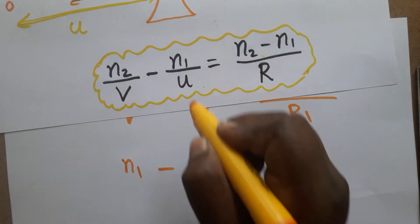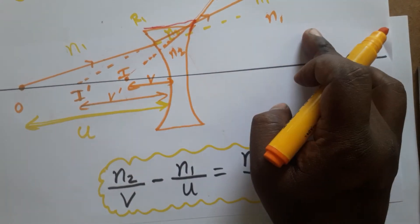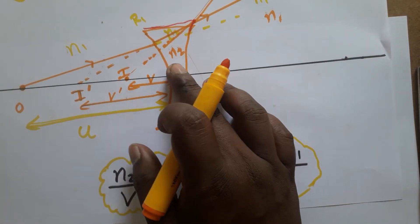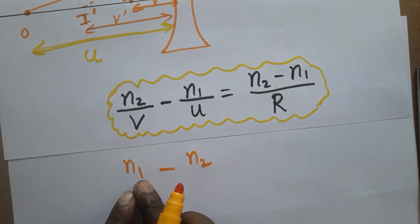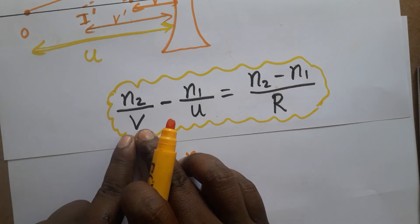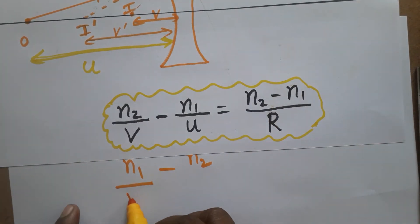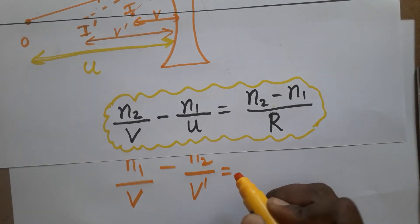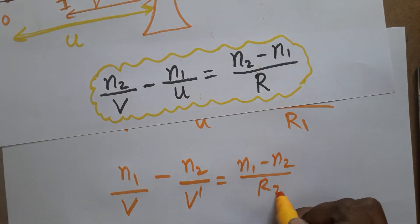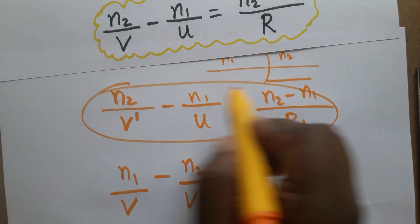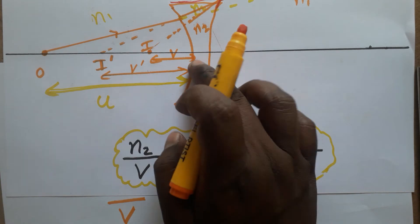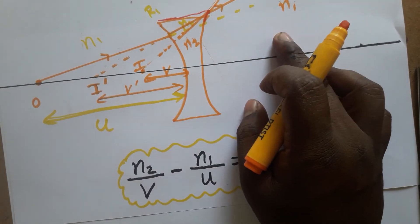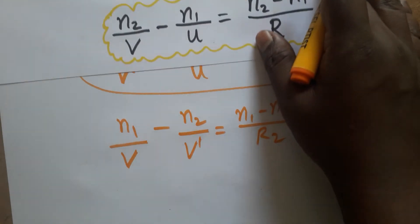For the second surface, in the refraction equation, n2 and n1 are swapped because the first medium is now n2 and the second medium is n1. So the second equation becomes: n1 divided by v minus n2 divided by v dash is equal to n1 minus n2 divided by R2. Equation one is for light traveling from first medium to second medium; equation two is for light traveling from second medium to first medium.